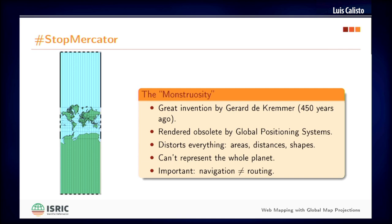Every day is a good day to bash Mercator. What is Mercator? It's really one of the most important map projections in history. It solved the major issue about navigating the high seas, but it's no longer used because global positioning systems pretty much rendered it useless. However, JavaScript and web mapping brought this projection back from the dead and we have to deal with and work around this so-called monstrosity.